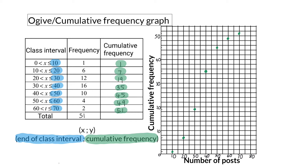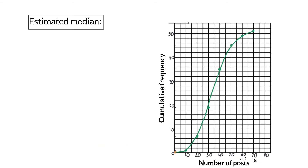It is important to always ground your ogive. You ground your ogive at the beginning of the first class with a cumulative frequency of 0. Then you connect all these coordinates freehand to draw your ogive or cumulative frequency graph.